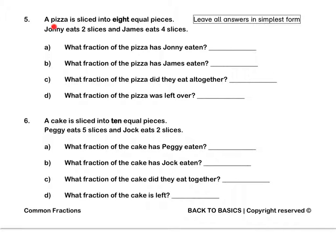Question 5. A pizza is sliced into 8 equal pieces. John eats 2 slices and James eats 4 slices. What fraction of the pizza has John eaten? He has eaten 2 out of the 8 pieces, which in simplest form is 1 quarter.